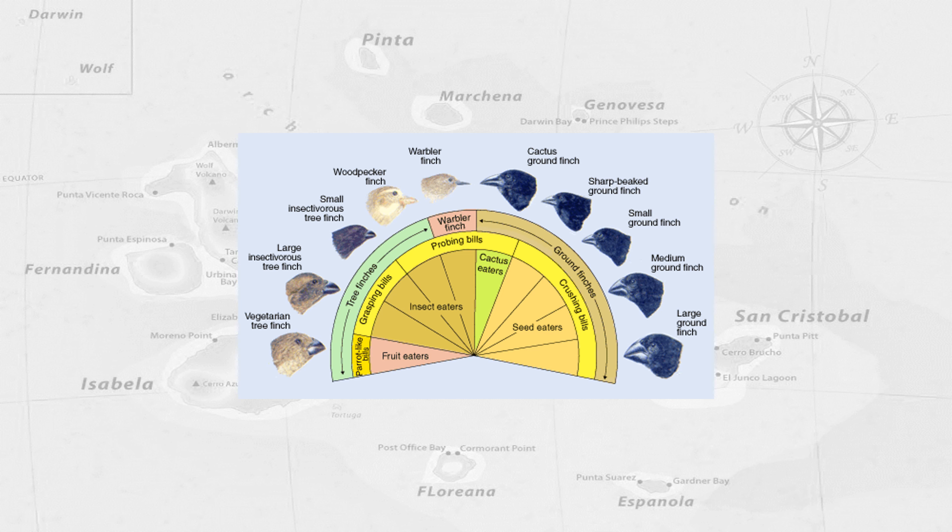These niche specialisations are observed in almost every species and are defining features within Darwin's finches that are likely to have occurred during population divergence. These evolutionary pathways have been ongoing for many millions of years and are key to the success of this group of birds.